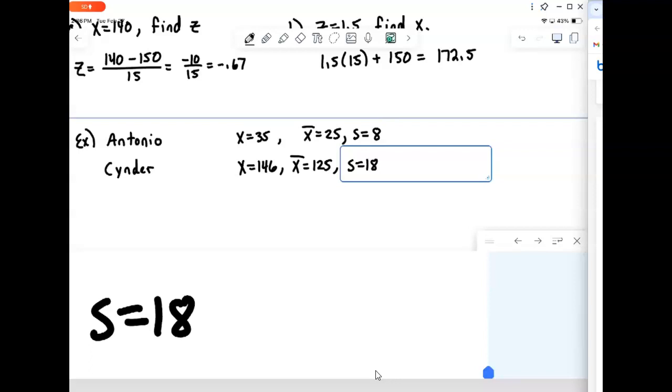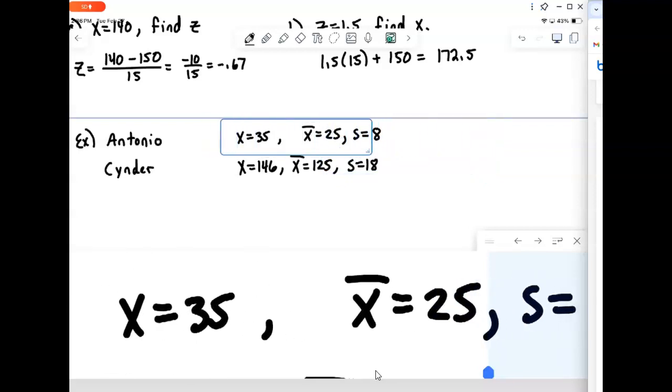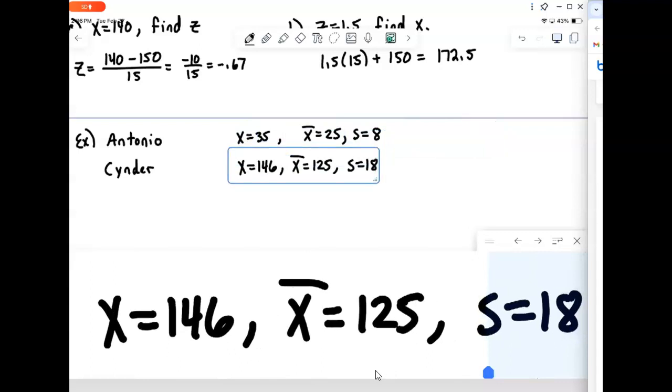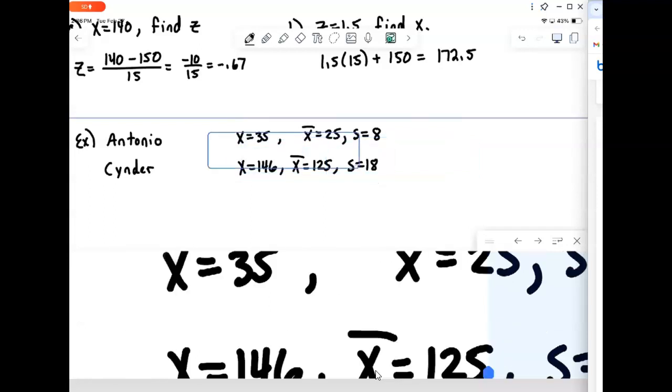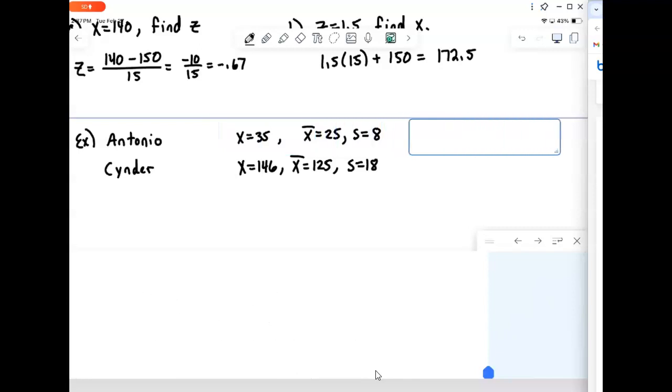We have to think in terms of the standard deviation. Who did better relative to their class? Well, what we can do is look at that difference. He's 35, 10 above the mean, with standard deviation of 8. And Cinder is 21 above the mean with a standard deviation of 18. In other words, if we want to compare where they ranked in their classes, we need to look at their z-scores.